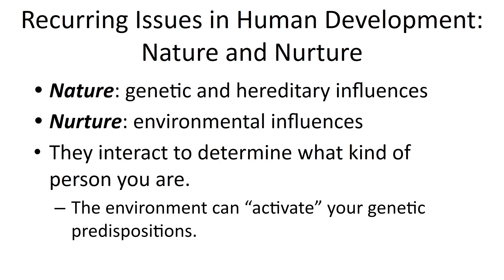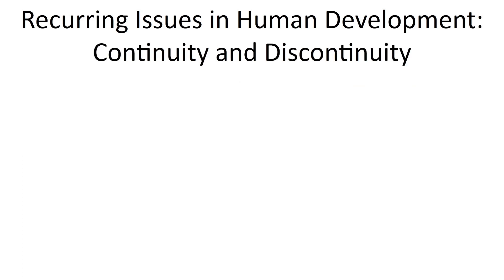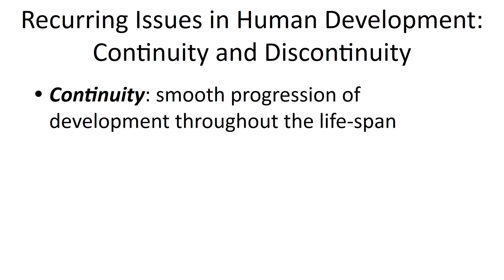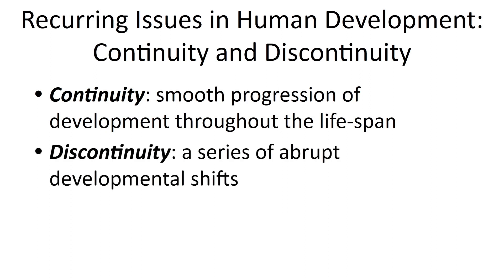Another recurring issue in human development research is theories that argue development is continuous versus other theories that argue it is discontinuous. Continuity just means subtle change — a smooth progression of development through the lifespan. A lot of aspects of human development do seem to be continuous like this, but other aspects seem more discontinuous, where suddenly the person seems to change — there's an abrupt developmental shift.